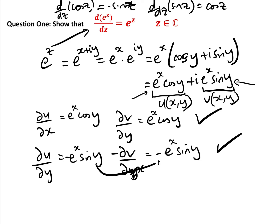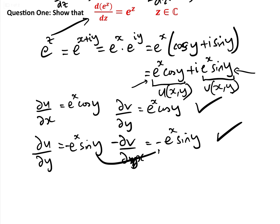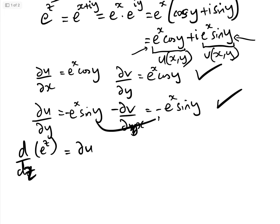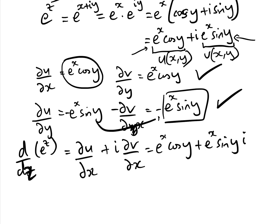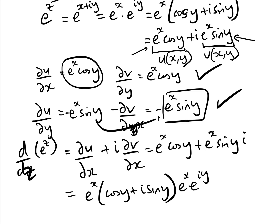We've confirmed that the Cauchy-Riemann equations are satisfied, so the function is complex differentiable. Differentiating with respect to z: d/dz(e^z) = ∂u/∂x + i·∂v/∂x = e^x·cos y + i·e^x·sin y. Taking out e^x gives e^x(cos y + i·sin y). Since cos y + i·sin y = e^(iy), we get e^x · e^(iy) = e^(x+iy) = e^z.